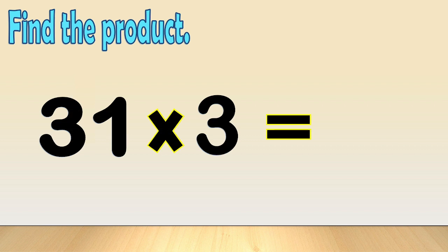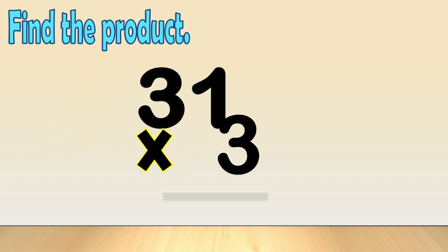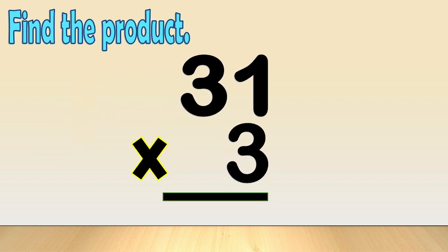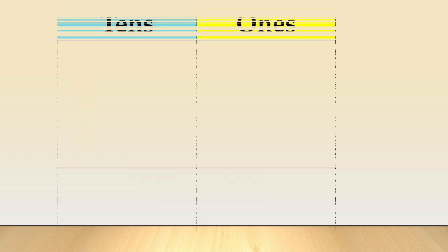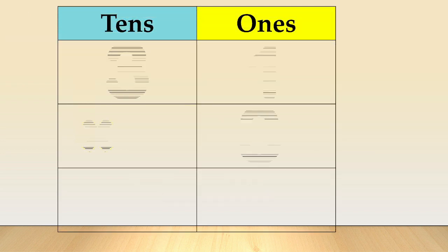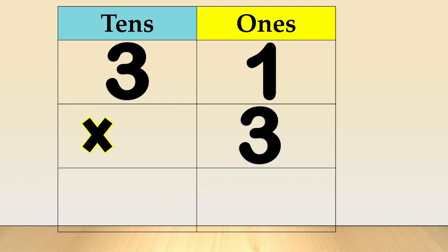Another example. Find the product: 31 times 3. First, arrange the numbers in columns like this. Place the digit of the number in a column based on its place value.